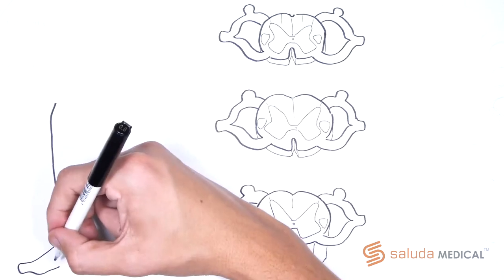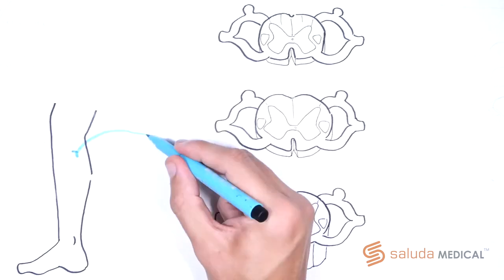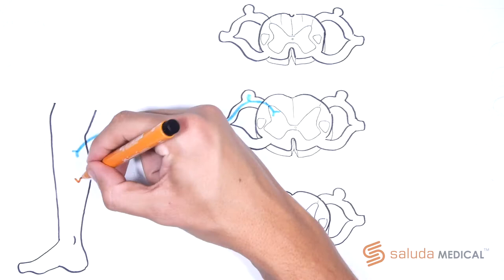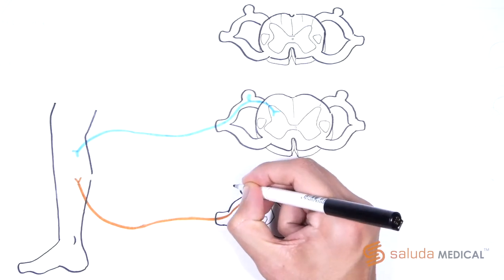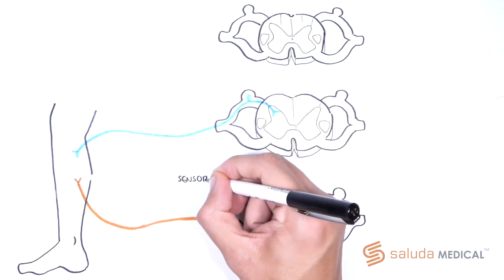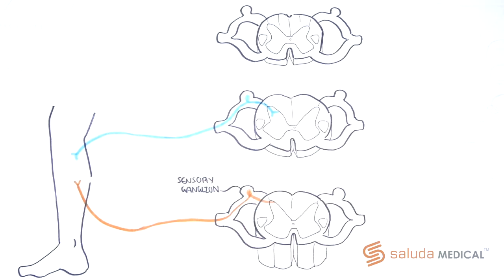Sensory fibres, also termed afferent fibres, are those which carry information from the periphery to the central nervous system. They bring in information related to touch, pain, temperature, etc. These fibres have their cell bodies in the sensory ganglion and project axons into the periphery and spinal cord.